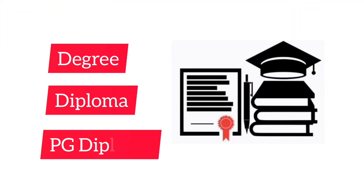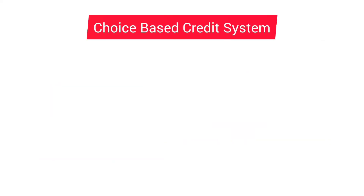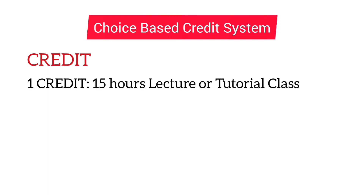Leading to attaining a degree, diploma, or PG diploma. To understand the Academic Bank of Credits, first we need to understand what a credit is. As per the Choice Based Credit System, the academic achievements of a student are measured in terms of credits, and one credit is equivalent to 15 hours of lecture or tutorial class.